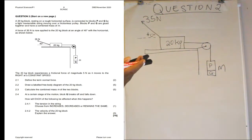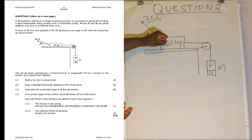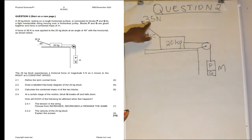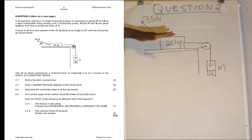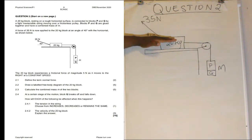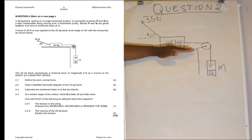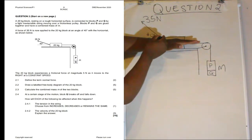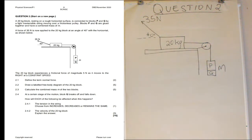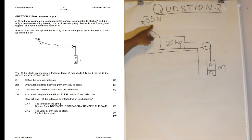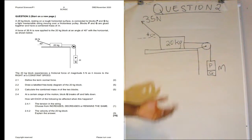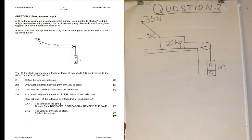A force of 35 newtons is applied on the 20 kg block at an angle of 40 degrees with the horizontal, as shown. So this block is pulled by a force of 35 newtons and that force makes an angle of 40 degrees with the horizontal. This means the block is not pulled horizontally or vertically but at an angle to the surface.